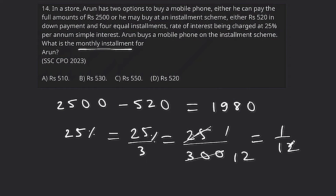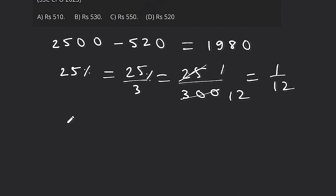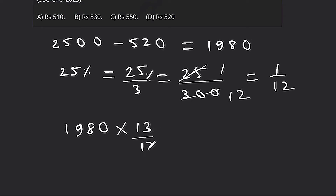There are 4 equal monthly installments. The principal amount remaining after the down payment will be Rs.1980 (i.e., 2500 minus 520). After 4 months, the amount with interest will be 1980 × 13/12. We can solve it step by step.